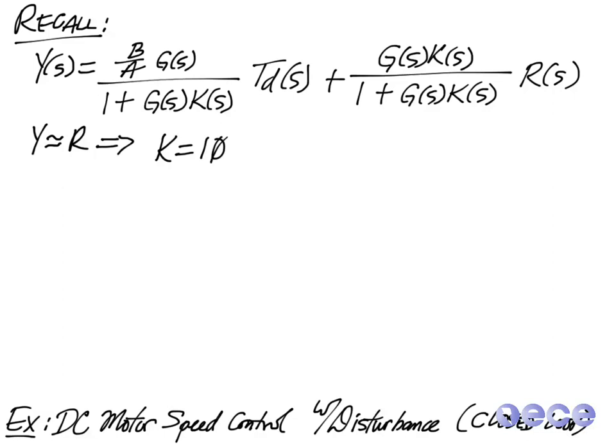So again, if we want Y approximately equal to R, we can choose a gain K that will approximate this. In the open loop case, we chose K equal to 1 over G, but if we choose K equal to 1 over G in the closed loop case, we don't get Y approximately equal to R.